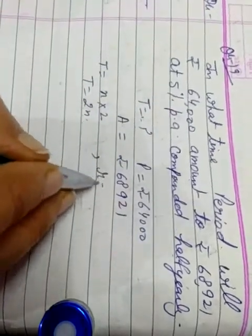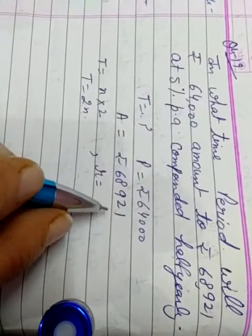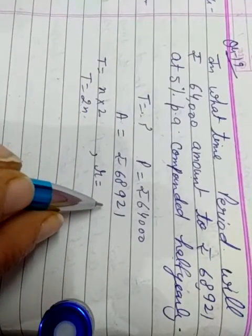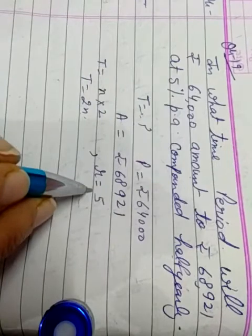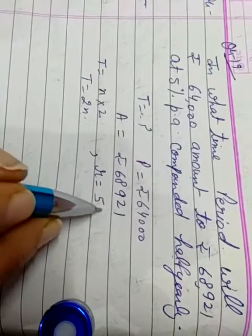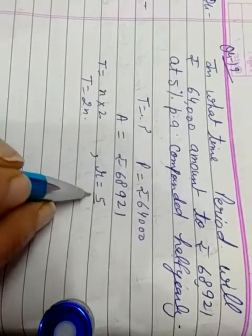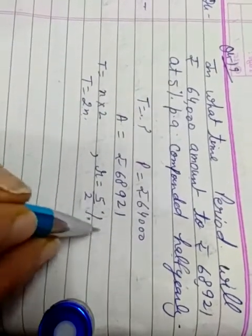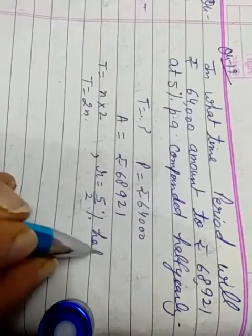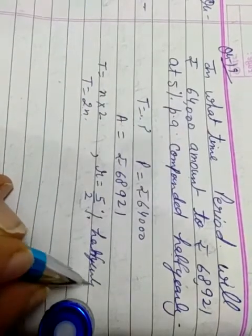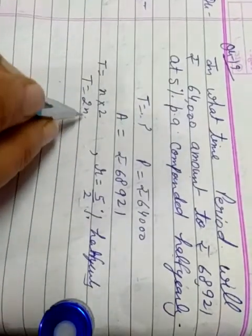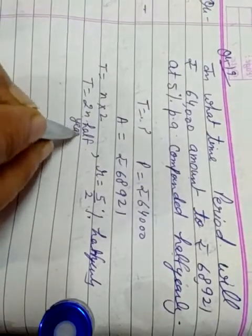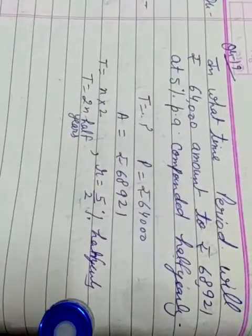Now rate: the rate given is 5% per annum. For half yearly it becomes 5 upon 2% per half year. And in place of N we write half years.